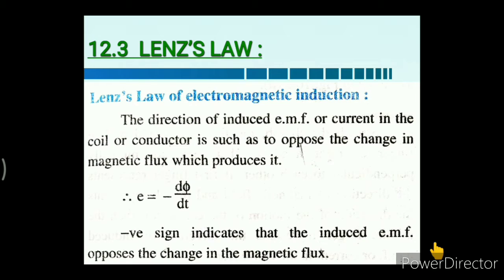Lenz's law gives the direction of induced current. It is defined as: the direction of induced EMF or current in a coil or conductor is such as to oppose the change in magnetic flux which produces it. That is why E = −dφ/dt, where the negative sign indicates that the induced EMF opposes the change in magnetic flux.